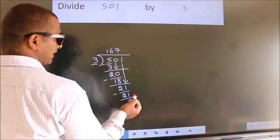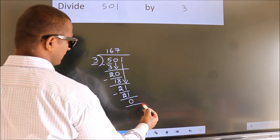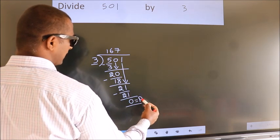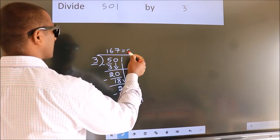No more numbers to bring it down. So, we stop here. This is our remainder. This is our quotient.